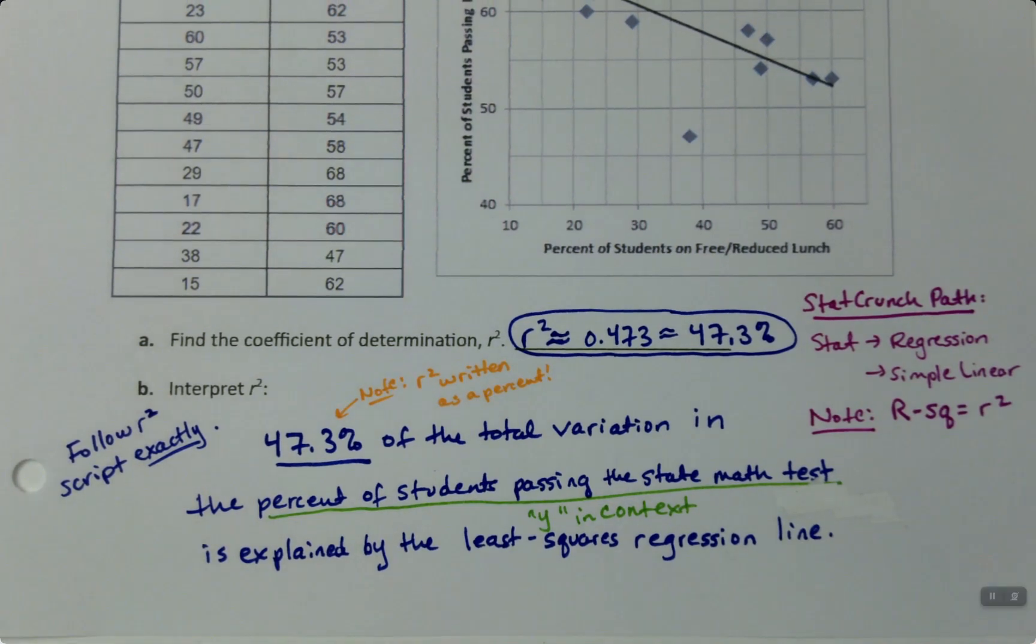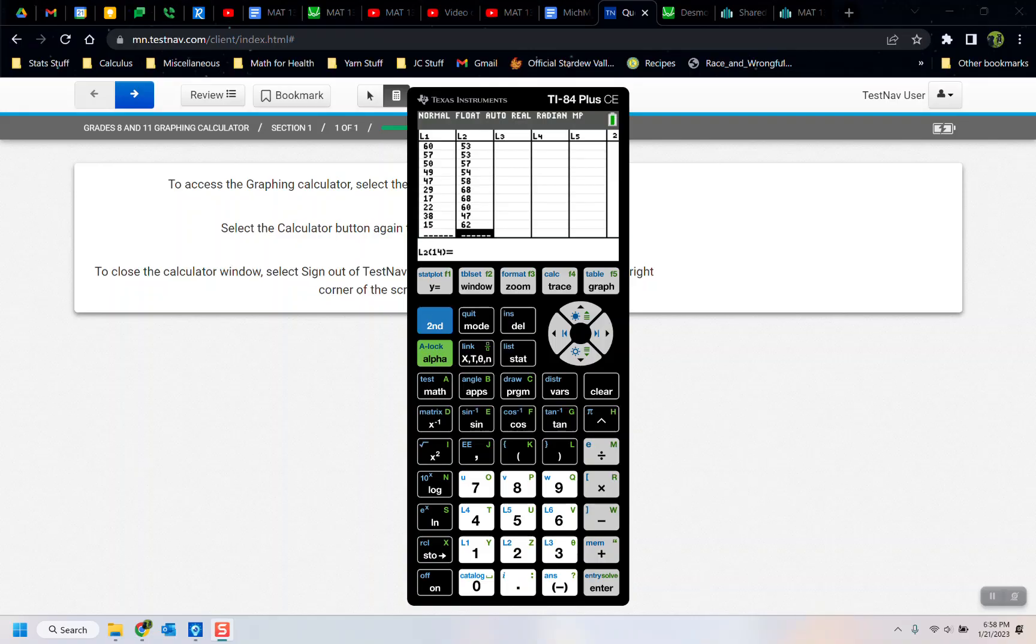Now I want to remind TI-84 folks how to find R-squared. If you're not working with a TI-84, just skip ahead to the next video. All right, in the TI-84, you want to go to Stat, number 1 Edit, and enter your two columns of data.